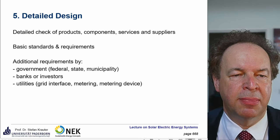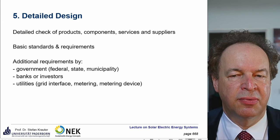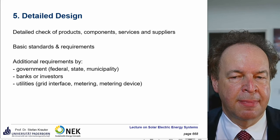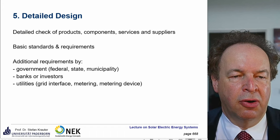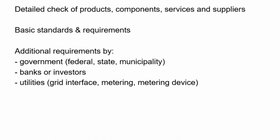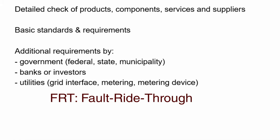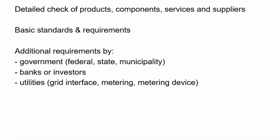There may be additional requirements from the government — for example, you have to show the company has long experience and exists for some time, and is able to withstand a crisis. Also for the banks, investors, or utilities — so the grid interface: how much harmonics can be fed into the grid, what happens if the grid is shut off, will you be paid, or do you have to immediately shut off the power plant? Sometimes there is a fault-ride-through requirement, where the power plant keeps operating for some milliseconds to override a power failure and help keep the grid running. Also for metering — you have to make sure the meters are all certified and calibrated. Sometimes there are requirements to use locally produced metering devices to ensure the metering is correct.